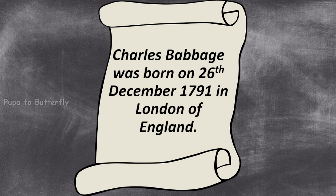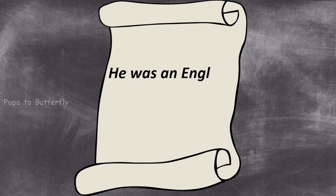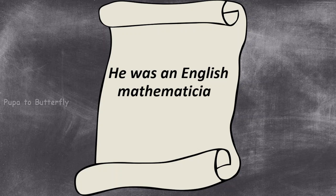Charles Babbage was born on 26th December 1791 in London, England. He was an English mathematician and inventor.